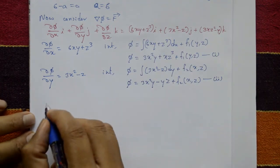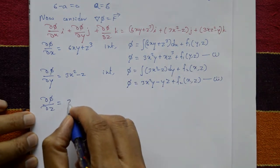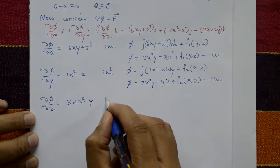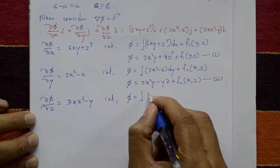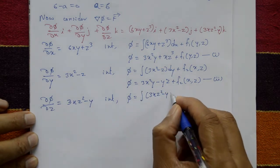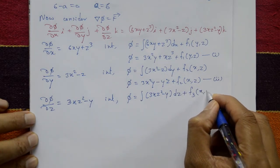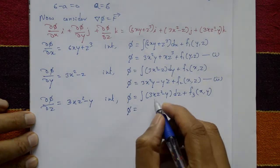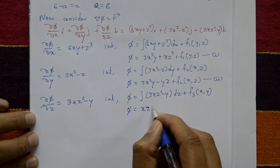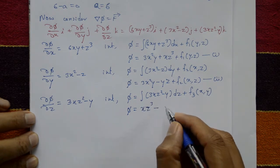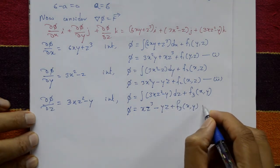From the coefficient of k: ∂φ/∂z = 3xz² - y. Integrating both sides with respect to z, φ = xz³ - yz + f₃(x, y), where f₃(x, y) is an arbitrary function. This is equation number three.